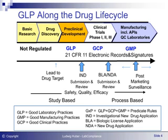This slide shows the so-called good practice regulations and how they correlate between GLP, GCP, and GMP. It shows how they correlate with the life of a drug, starting with basic research and drug discovery on the left side, then going to preclinical development in the middle, clinical trials, and finally to manufacturing on the right side.